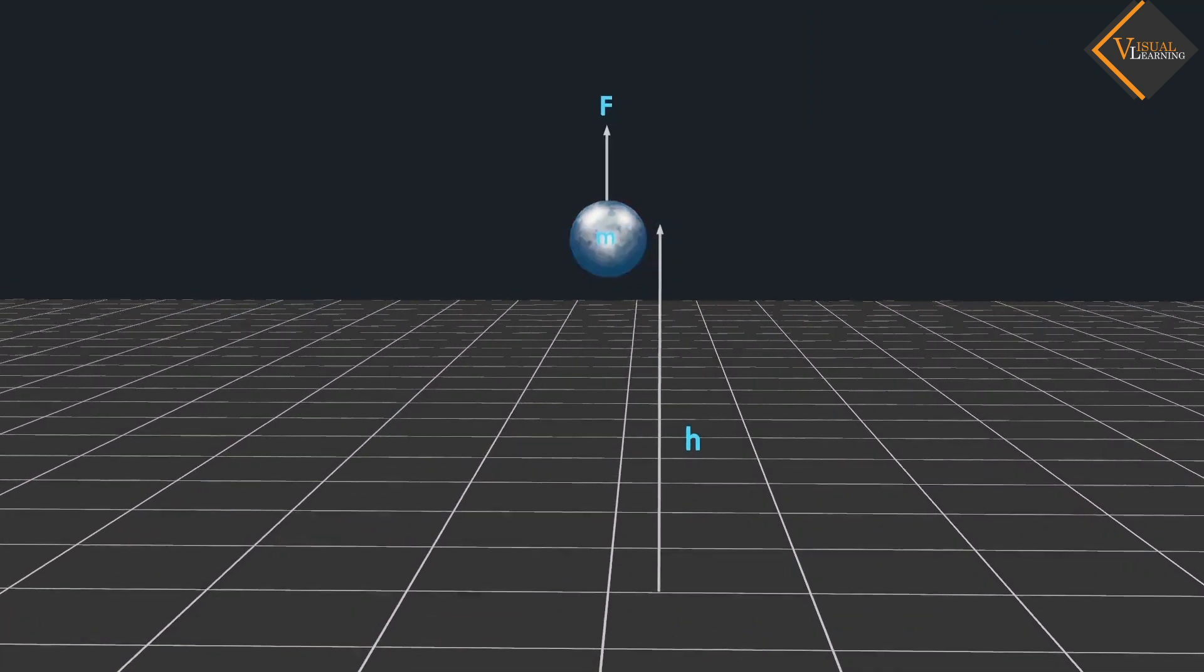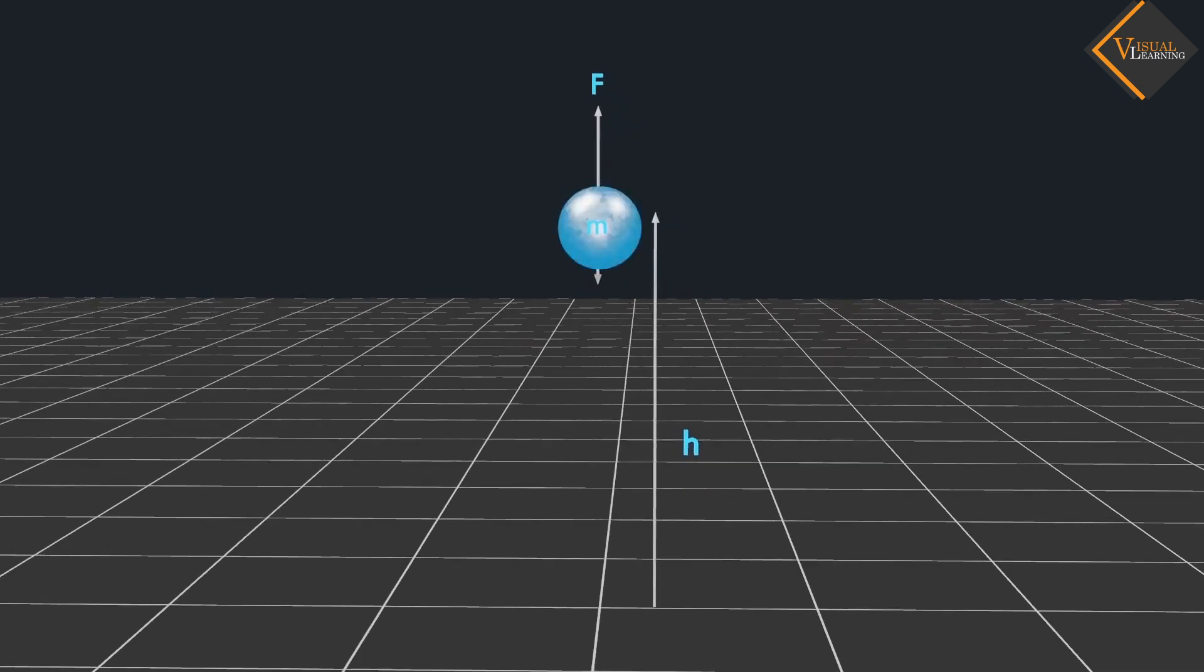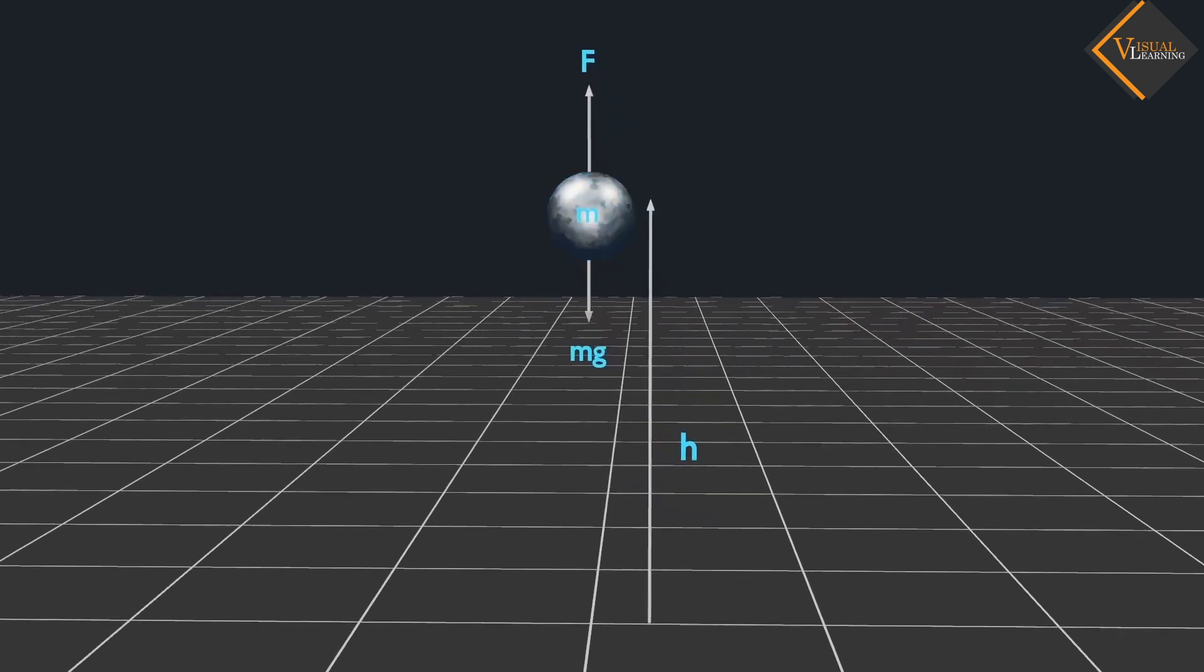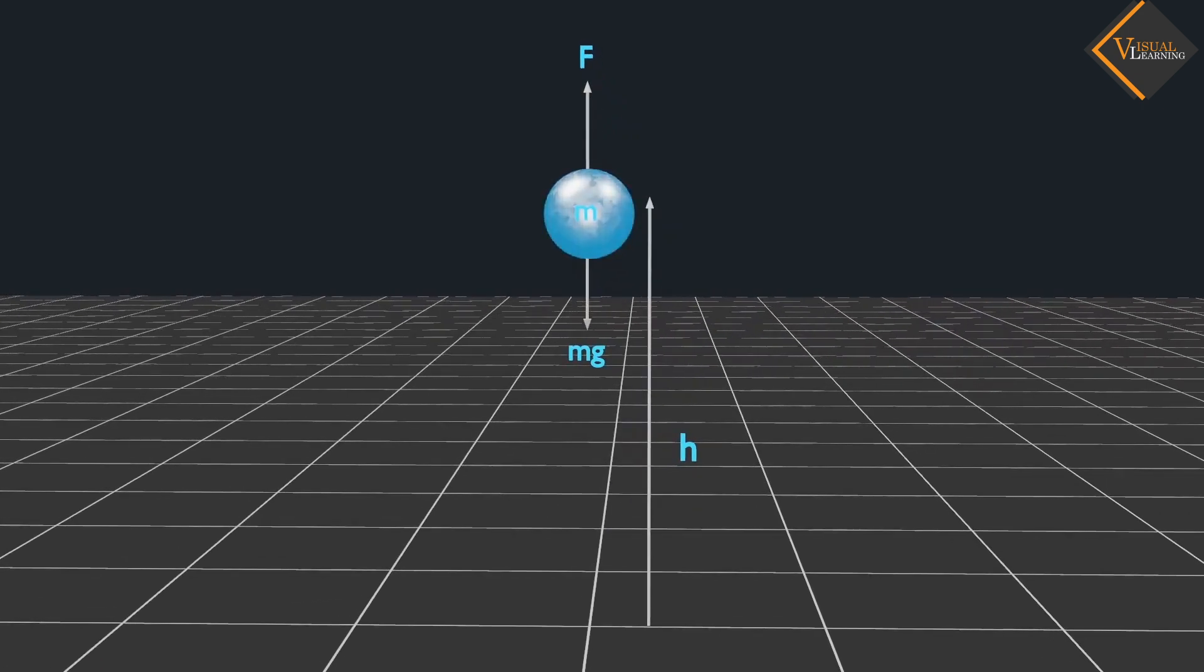The minimum force required to raise the object is equal to the weight of the object, Mg. The object gains energy equal to the work done on it. The energy present in such an object is the gravitational potential energy. And this is the energy possessed by the object by virtue of its position.